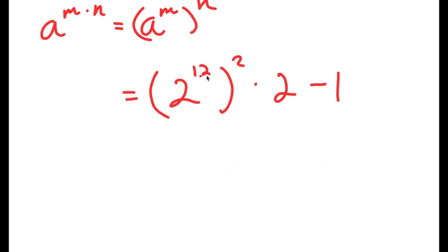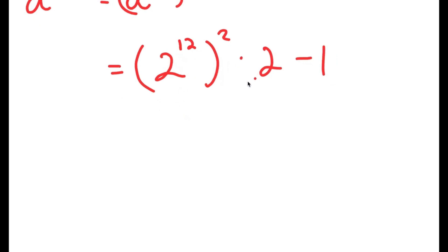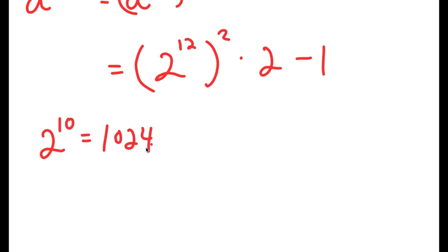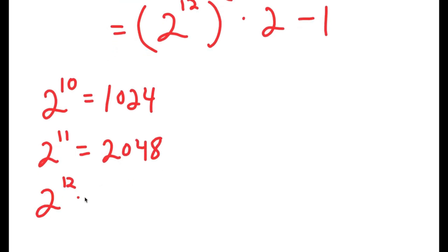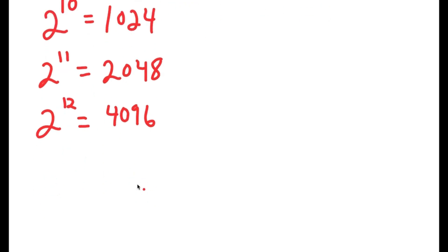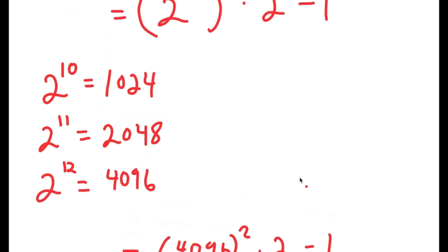I'm going to plug in the actual value of 2 to the power of 12, because it's small enough that we know the exact value. 2 to the power of 10 is 1024, so 2 to the power of 11 is 2048, and 2 to the power of 12 is double of 2048, which is 4096. So now I get 4096 squared times 2 minus 1.